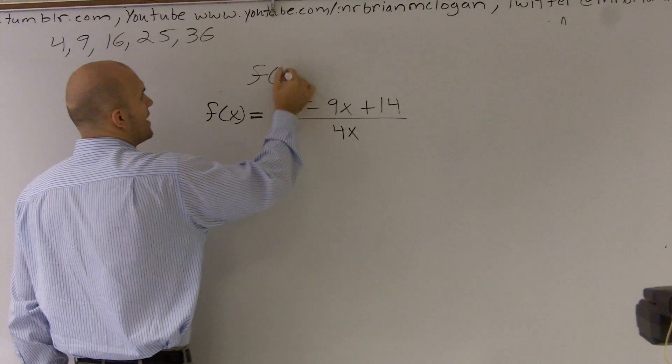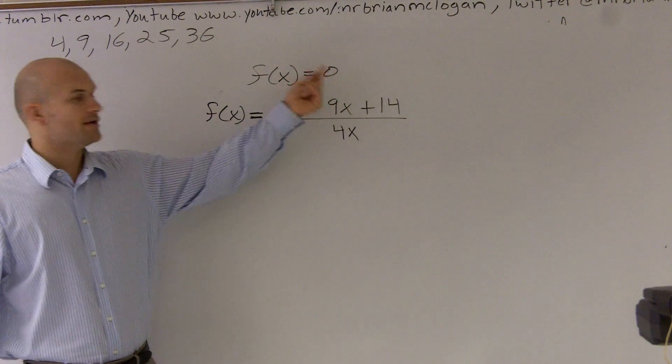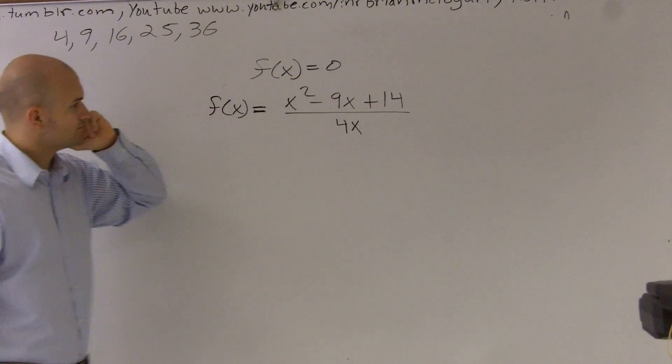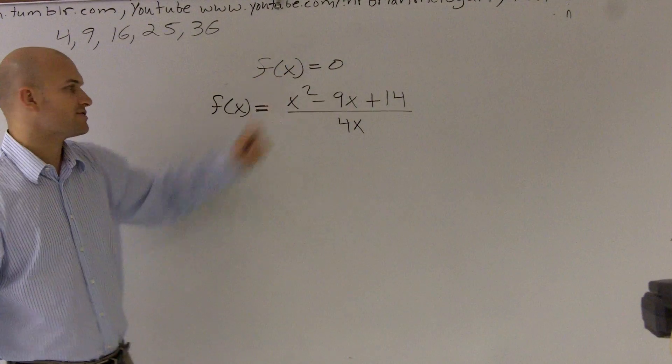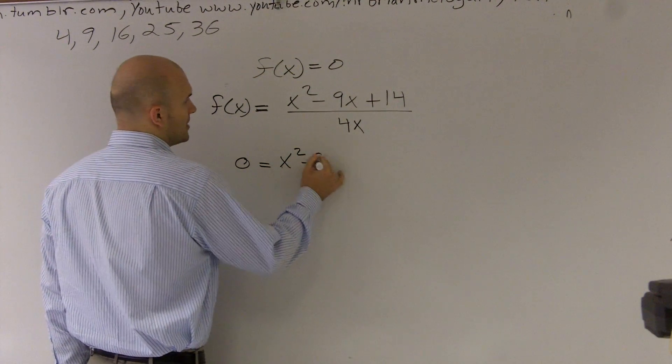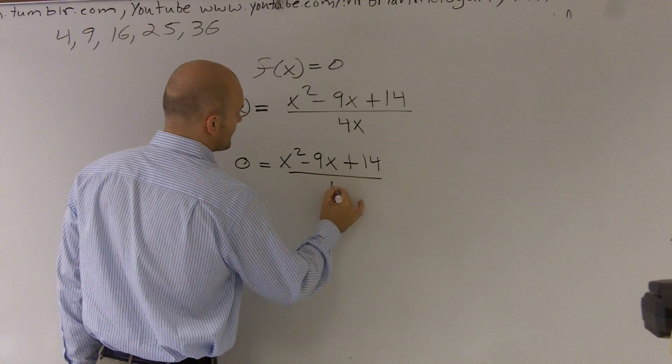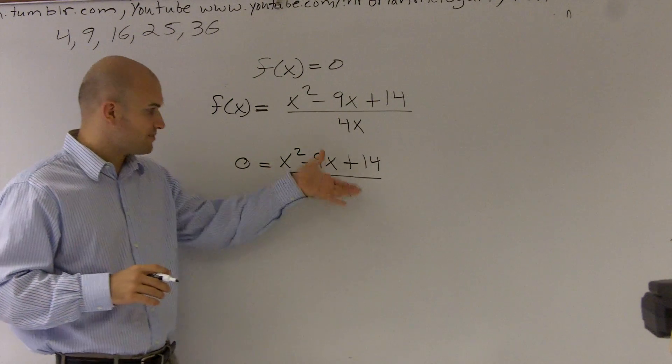So we're going to say that's when f of x equals zero. So we need to find what values are going to make our output equal to zero. If I want to figure out the x values when f of x equals zero, I'm going to plug zero in for x squared minus 9x plus 14 all over 4x. So now we have this kind of crazy expression over here. It's a rational expression. We have a trinomial at the top.